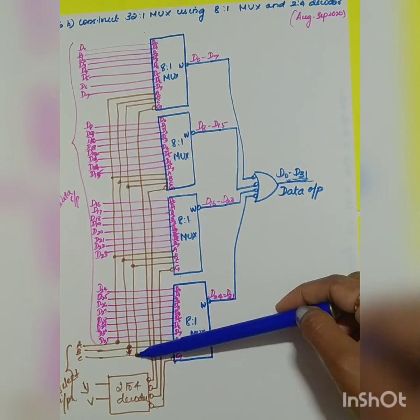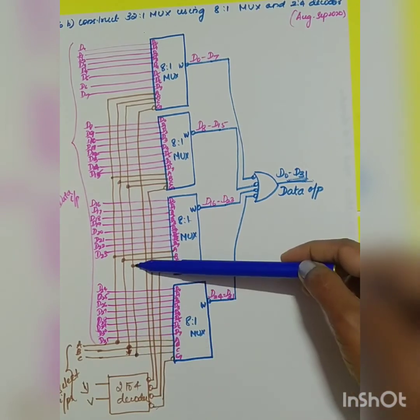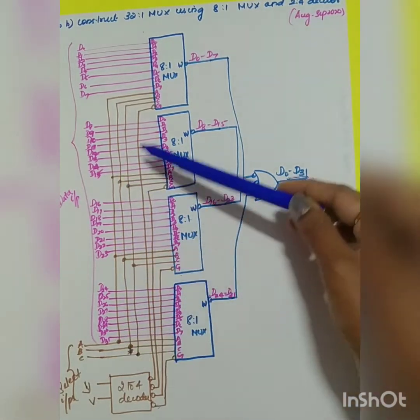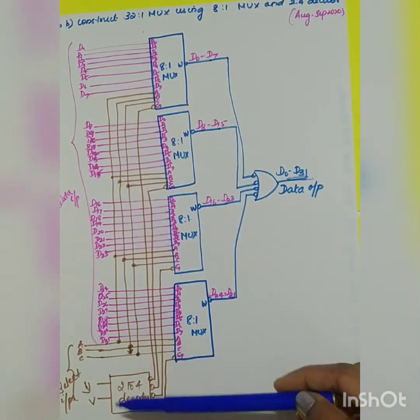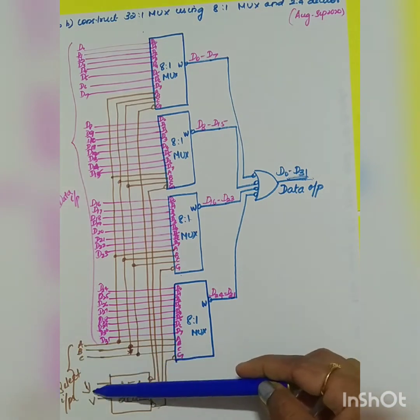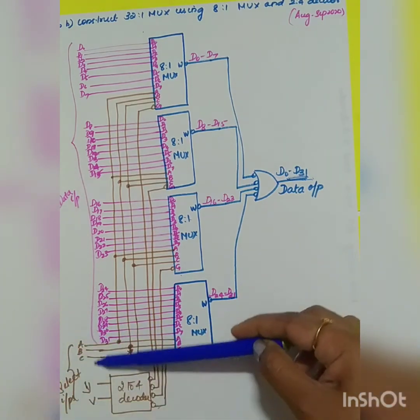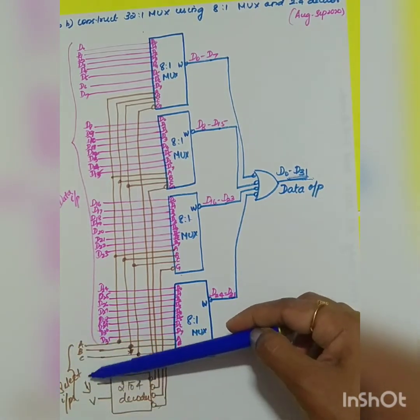Select lines will be connected together. C will be connected to all four MUXes. Similarly, B and A will be connected to all four MUXes. A, B, C along with the V and Y inputs of the decoder will act as select inputs—totally five select inputs for the whole circuit.